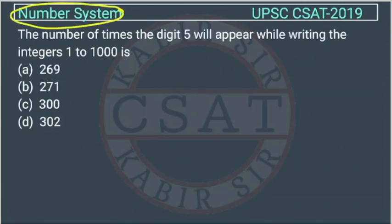This is a question from the number system chapter asked by UPSC in CSAT paper of 2019. The number of times the digit 5 will appear while writing the integers from 1 to 1000.